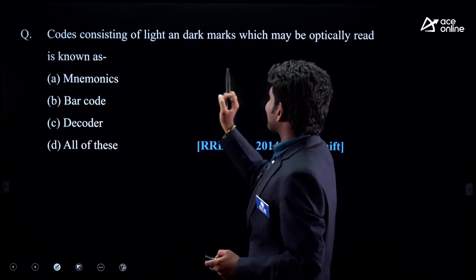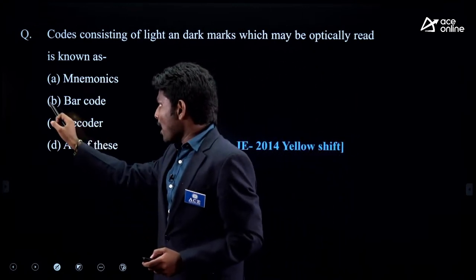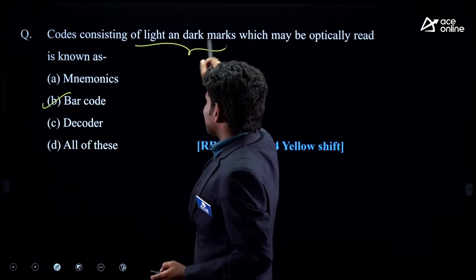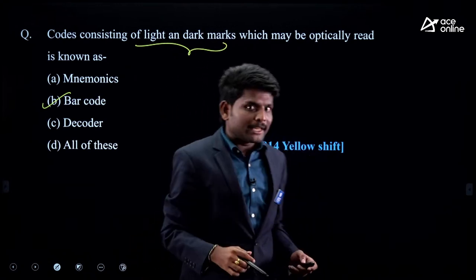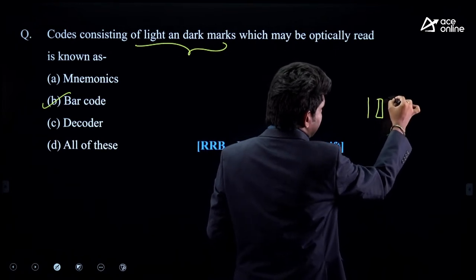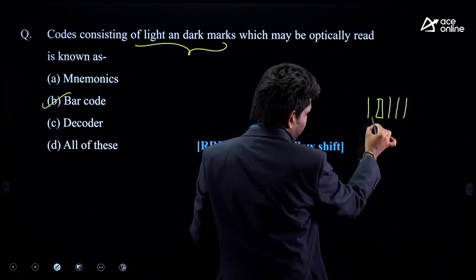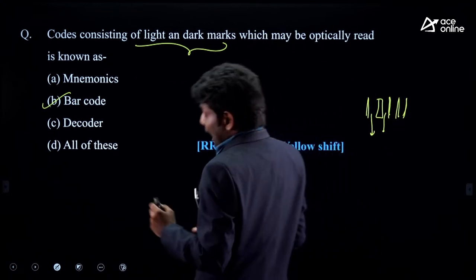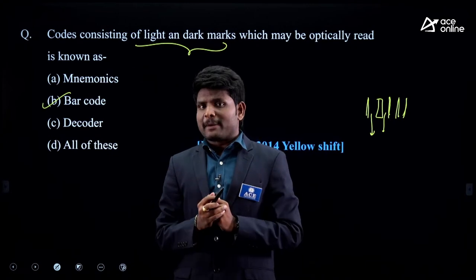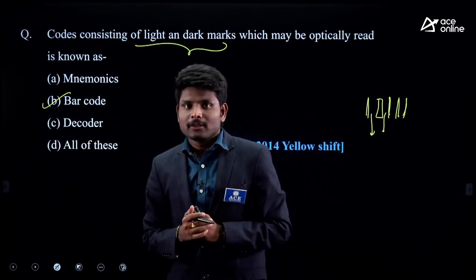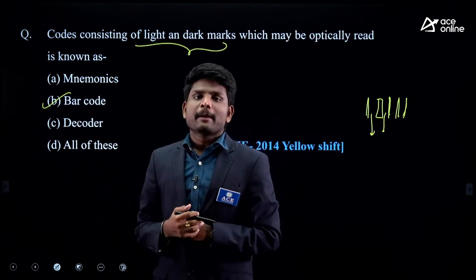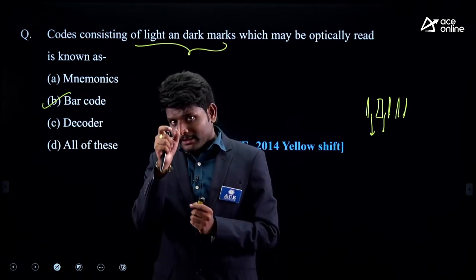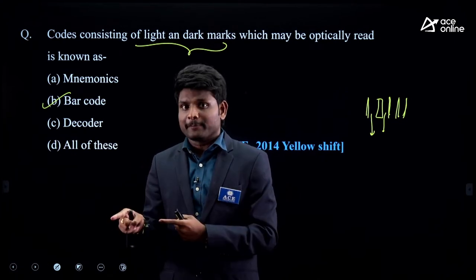Next question: 'Codes consisting of light and dark marks which may be optically read.' I already told you — the answer is barcode. Barcodes have thin lines and thick lines with gaps. The empty spaces are light marks and the bars are dark marks. First they asked about OMR, here about barcodes — next year they may ask about QR codes or UPI, since all these are similar technologies.